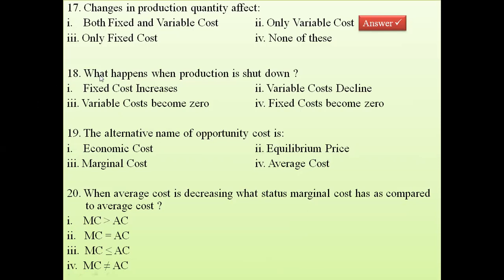Question 18: what happens when production is shut down — fixed cost increases, variable cost declines, variable cost becomes zero, or fixed cost becomes zero? The answer is variable cost becomes zero. The shutdown point in a market occurs where average variable cost (AVC) touches the MR line, so variable cost is the key parameter. When production is shut down, variable cost becomes zero.